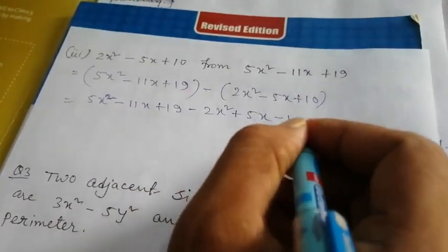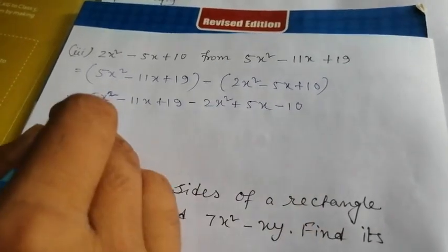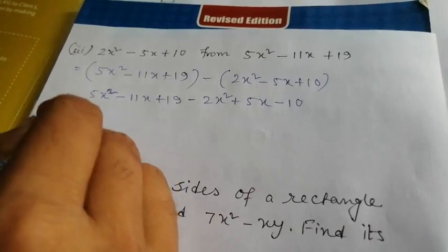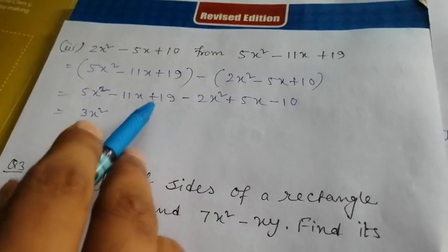Now this is 5x² and this is 2x². Like terms are added, so 5x² minus 2x² equals how many x²? 3x². Then minus 11x and plus 5x.